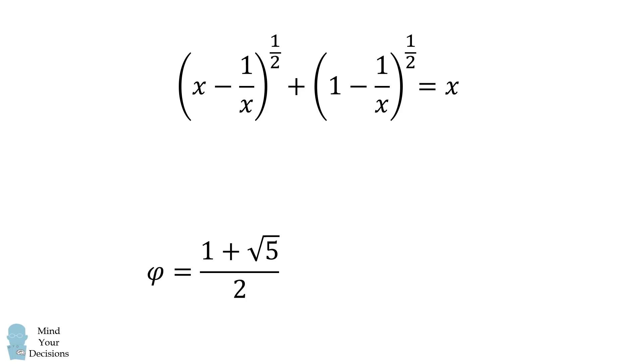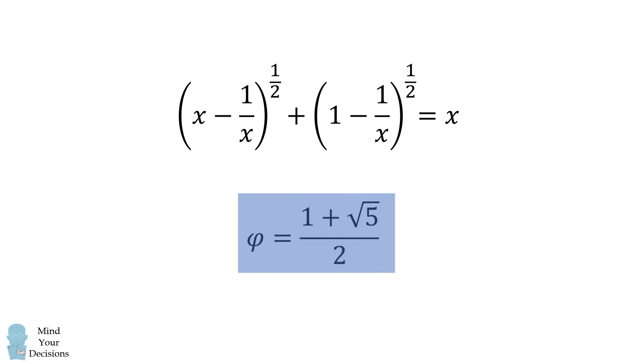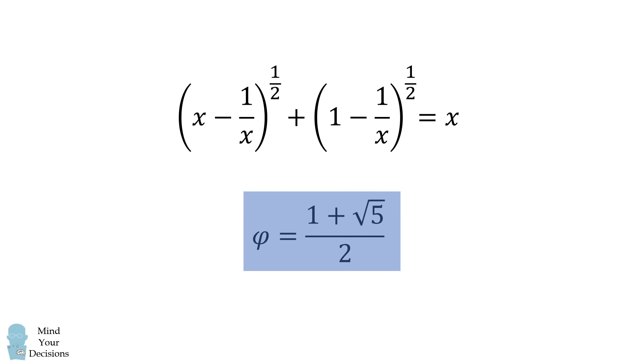We are left with the other possibility of the golden ratio, and we can check this is in fact a solution to the original equation. Therefore, the solution to the original equation is the golden ratio. It's quite a divine answer.